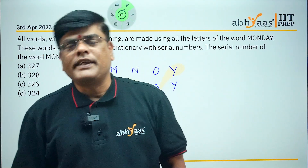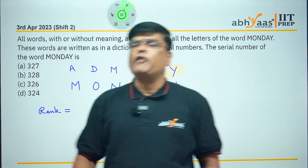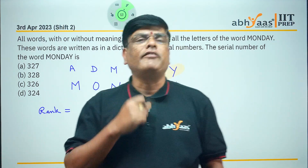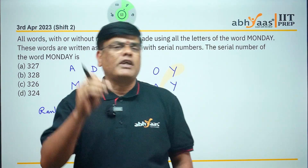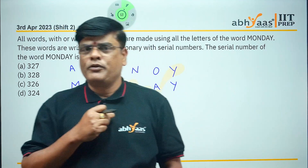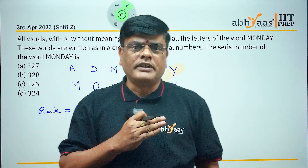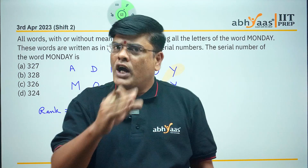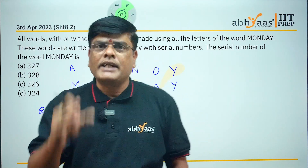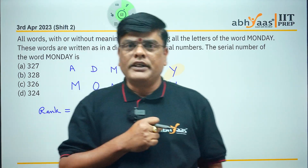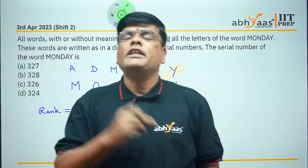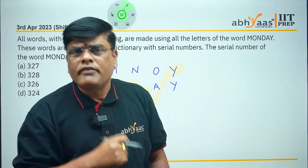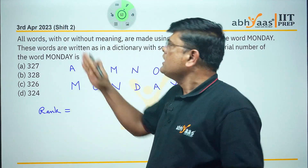Hello students. In this session we are going to learn one short method to find the rank of a given word. First we have to know what rank means: whenever a word is given, it contains some alphabets, and if you arrange those letters in dictionary order, whatever number the word is at — that is called its rank.